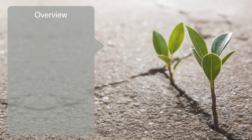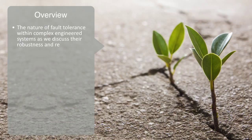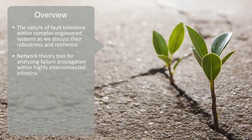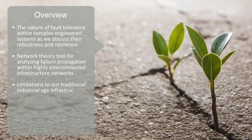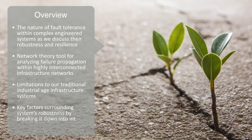In this video, we'll be talking about the nature of fault tolerance within complex engineered systems, as we discuss their robustness and resilience. We'll be largely talking about this from the perspective of network theory, as it provides us with one of the best tools for analyzing failure propagation within our highly interconnected infrastructure networks. We'll try to give some context by talking about the limitations to our traditional industrial age infrastructure systems, and start to dig into some of the key factors surrounding systems robustness by breaking it down into internal and external factors.